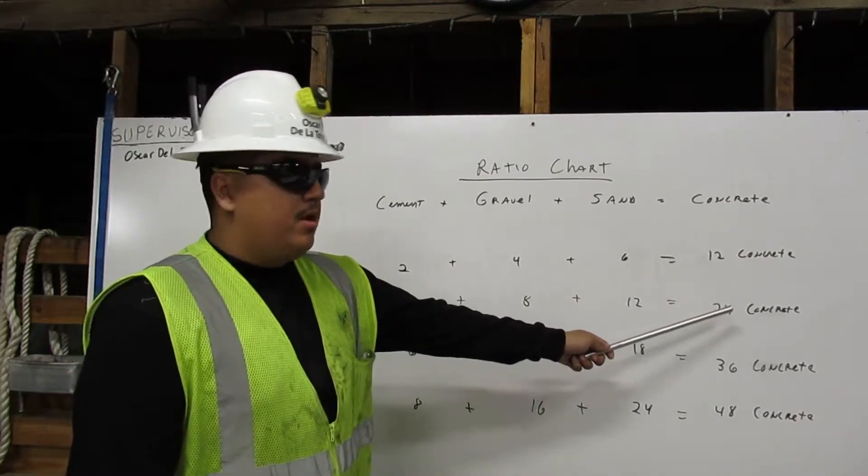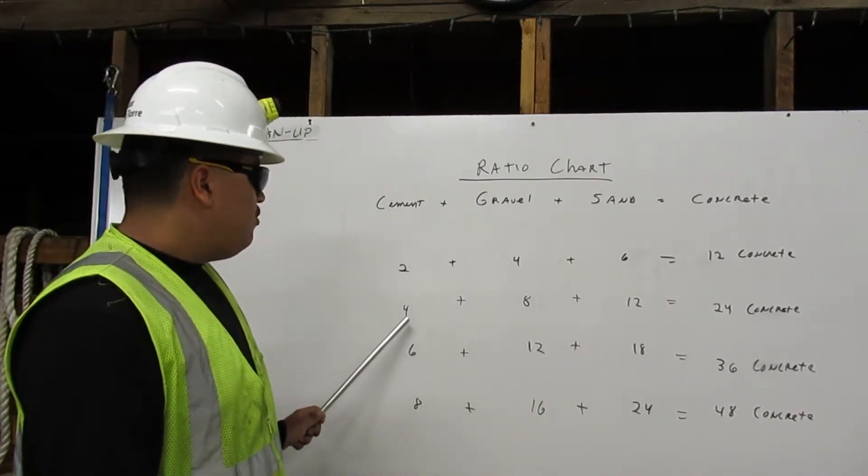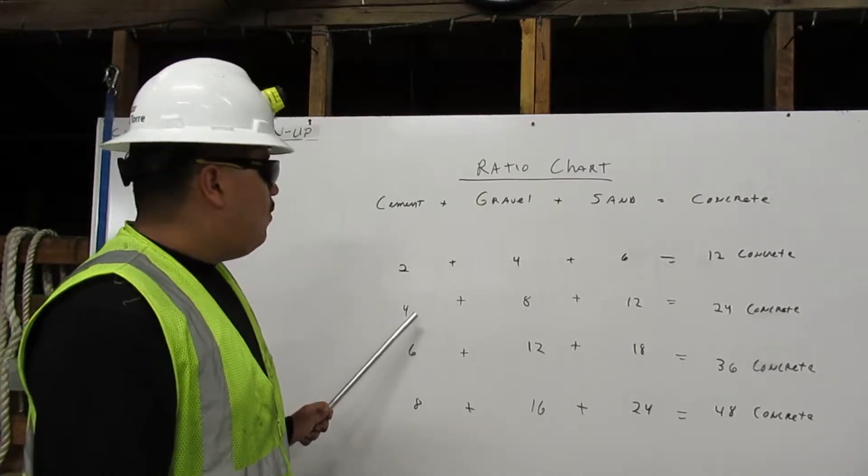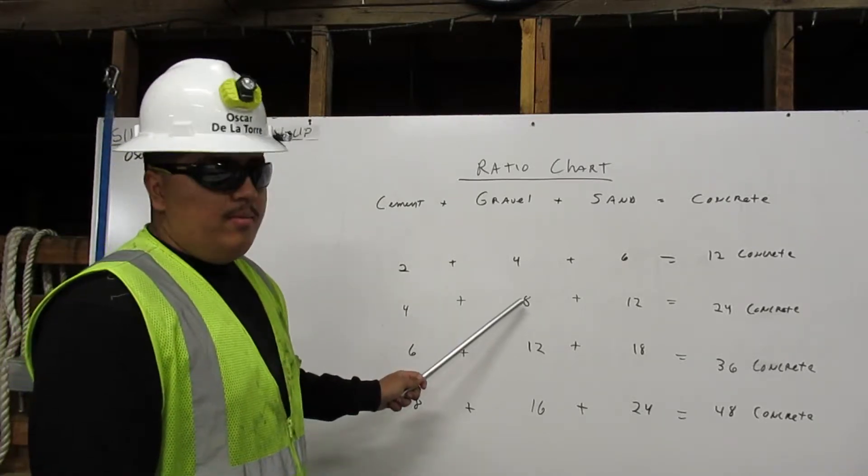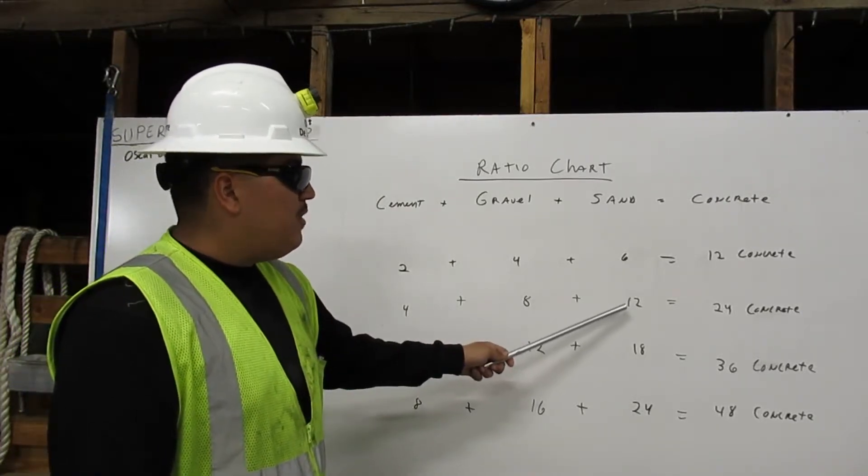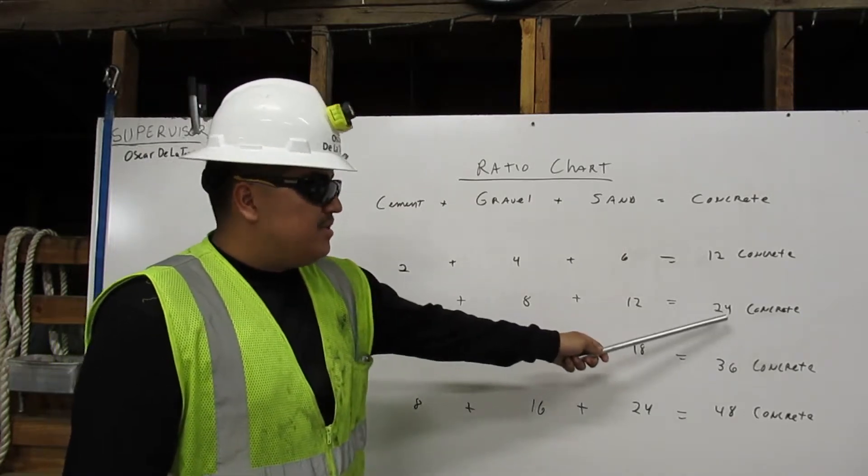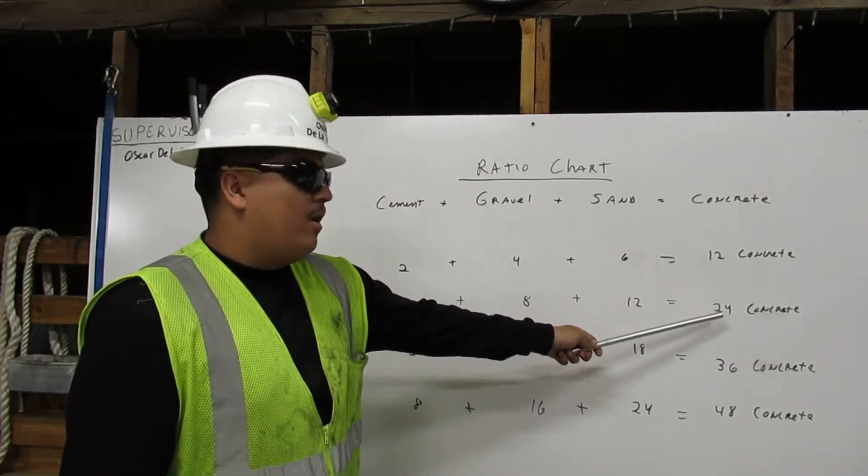To get 24 cubic yards of concrete, we will use 4 cubic yards of cement with 8 cubic yards of gravel with 12 cubic yards of sand. That's how you get 24 cubic yards of concrete.